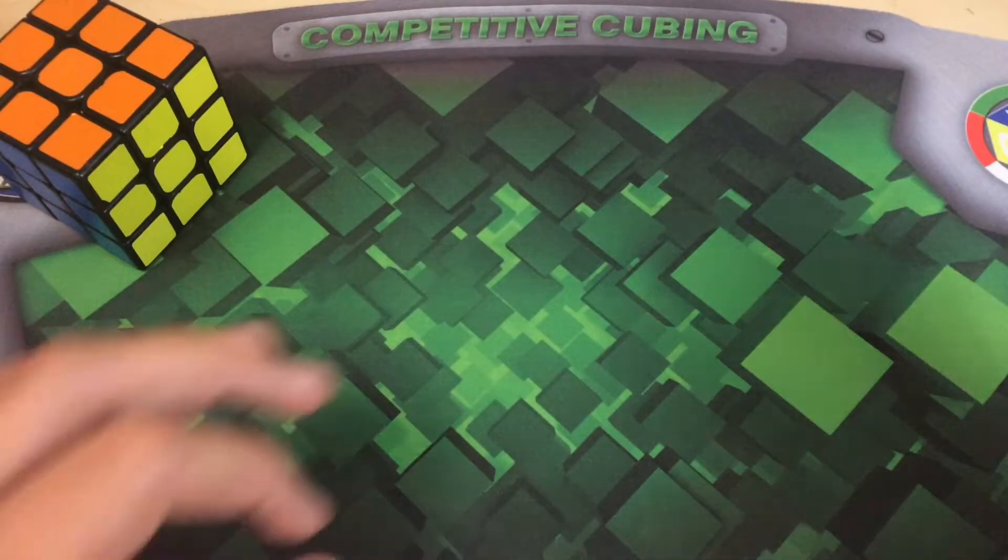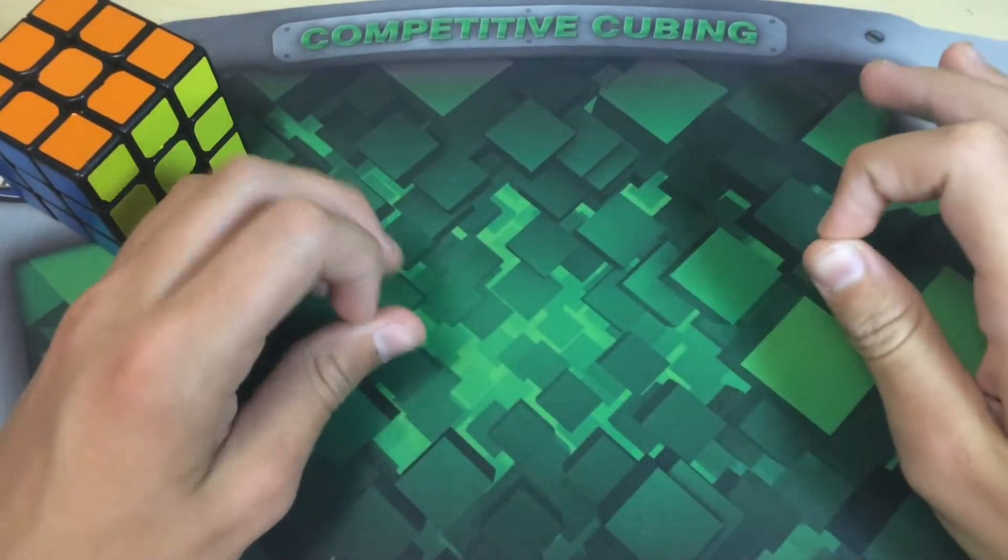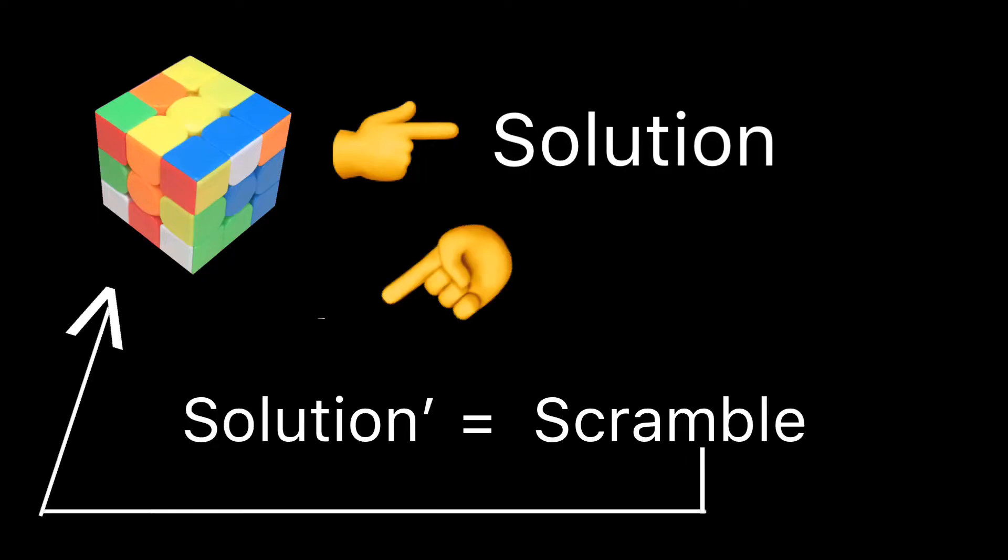In order to accomplish this, we need to understand how computer-generated scrambles work. The first thing a computer does is generate a random solvable cube state, and then it solves it and inverses the solution to give a scramble for that cube state.